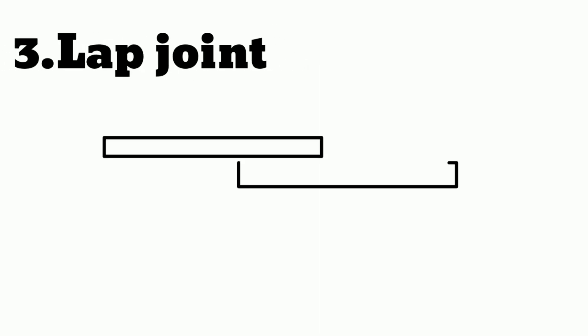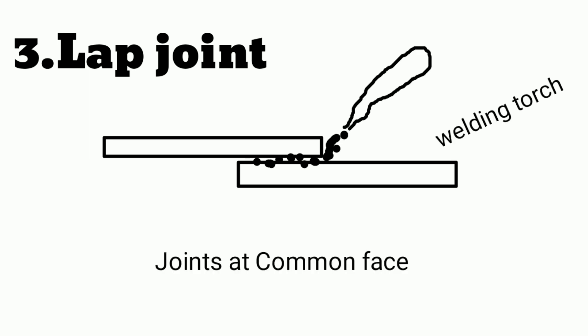Now the third one is lap joint. In the lap joint, the two parts are joined in an overlapping condition, as shown in the figure.